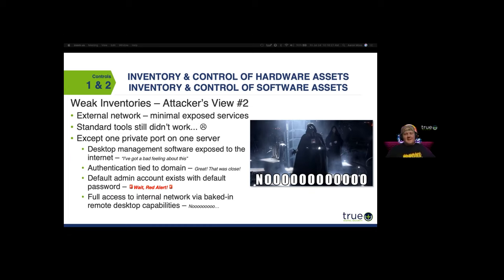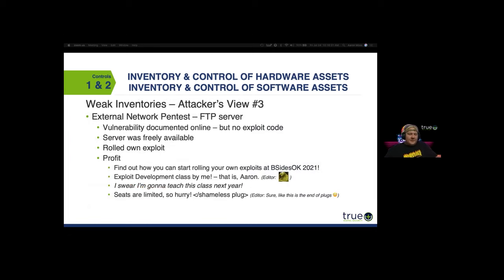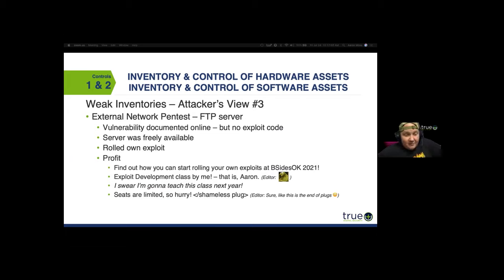Attacker view number three — external pen test with an FTP server: a vulnerability was documented online, but there was no exploit code for it. The server was free, so we downloaded it, reverse-engineered it a bit, found the point of vulnerability, rolled our own exploit, and got remote code execution. If you want to find out more about this, join me next year at BSides 2021 for the exploit development class I'm still actively developing.